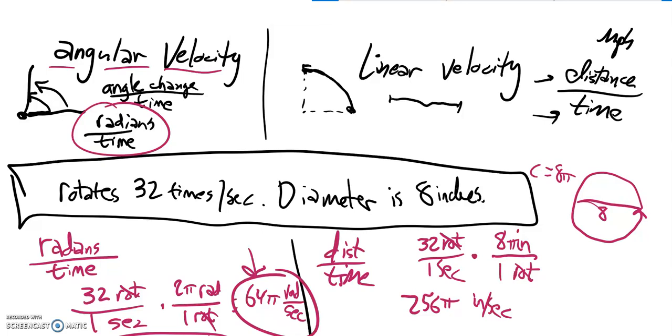If I multiply that out, that is about 804.25 inches per second. Either answer is good. I think this one's a little easier to visualize. So that's the basic idea between angular velocity and linear velocity.